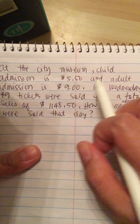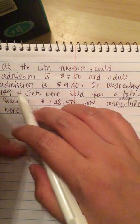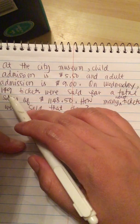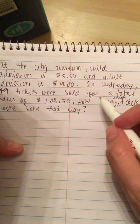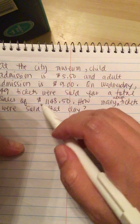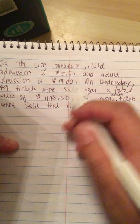At the City Museum, child admission is $5.50 and adult admission is $9. On Wednesday, 149 tickets were sold for a total sales of $1,148.50. How many adult tickets were sold that day?